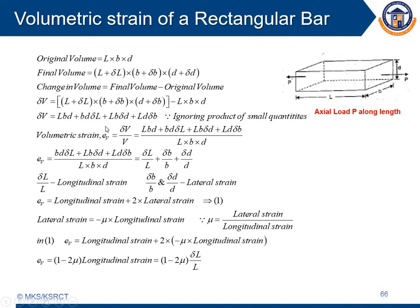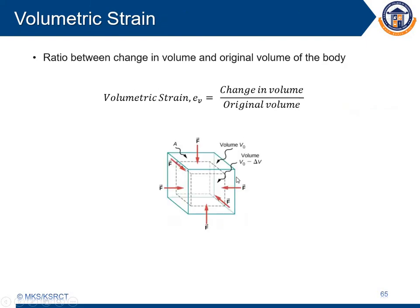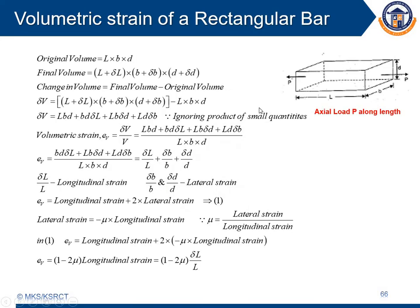A simple way to memorize: if we are using delta L, we use the other two terms B·D in front; if using delta D, we use the other two terms L·B. This gives the change in volume. The volumetric strain — change in volume by original volume L·B·D — simplifies to δL/L + δB/B + δD/D. This is the volumetric strain formula for a rectangular bar.